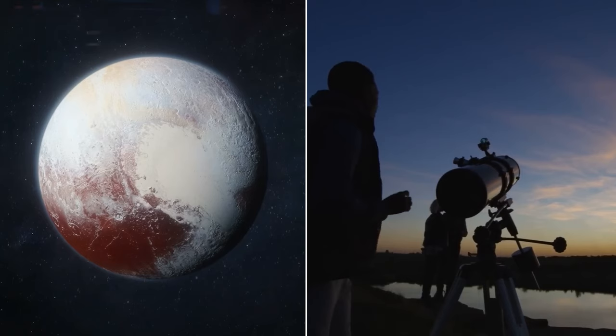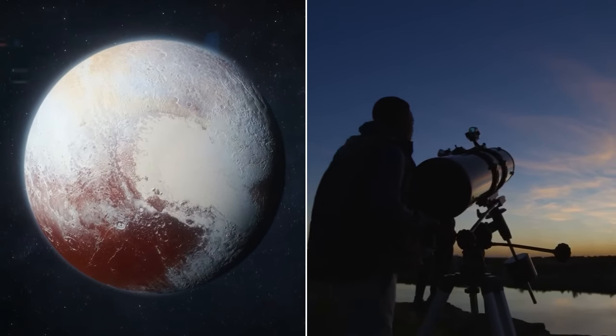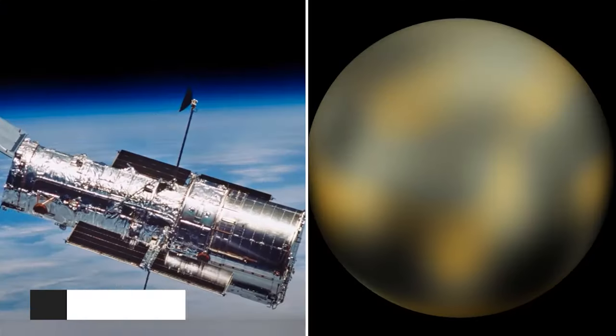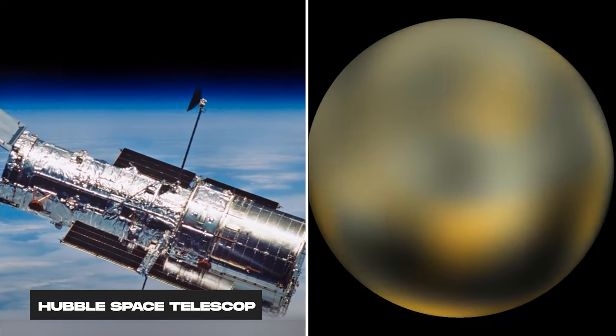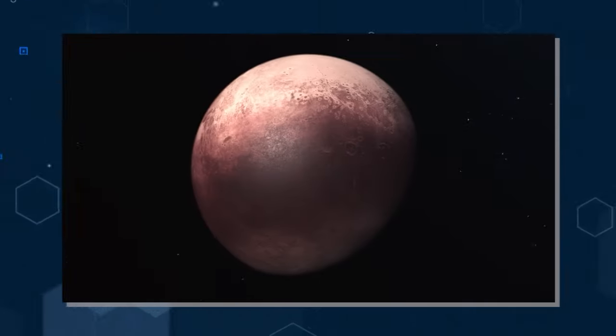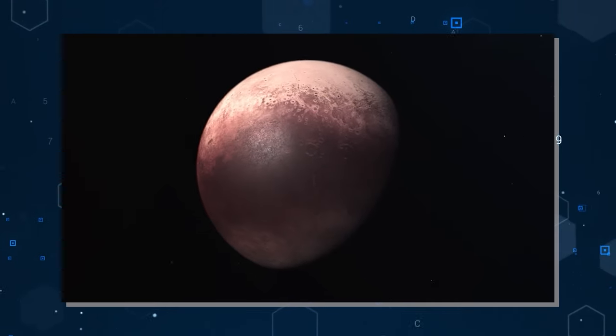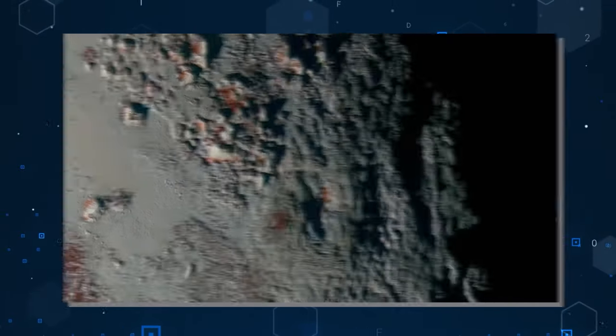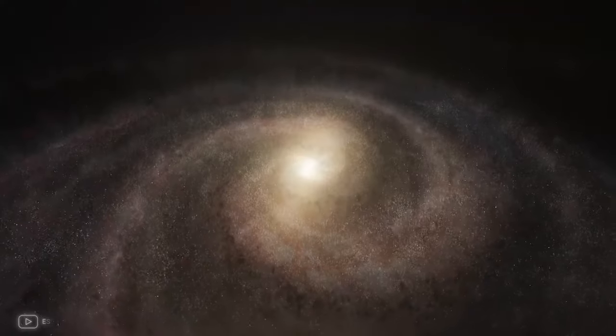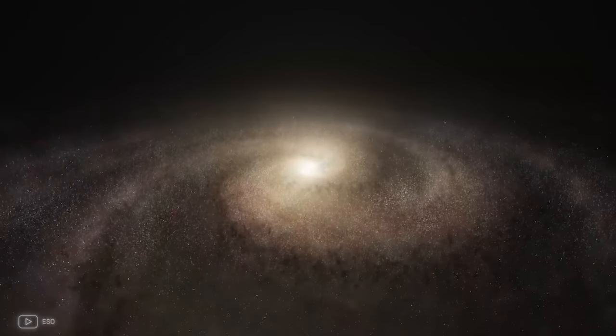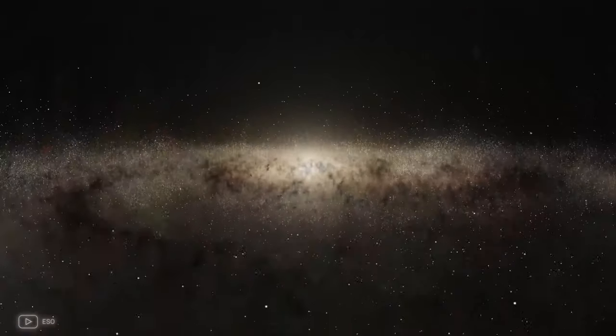Pluto's distant and faint nature makes it virtually invisible to the naked eye from Earth. Even in images captured by the Hubble Space Telescope, this dwarf planet presents itself as a hazy brown disk devoid of discernible surface features.